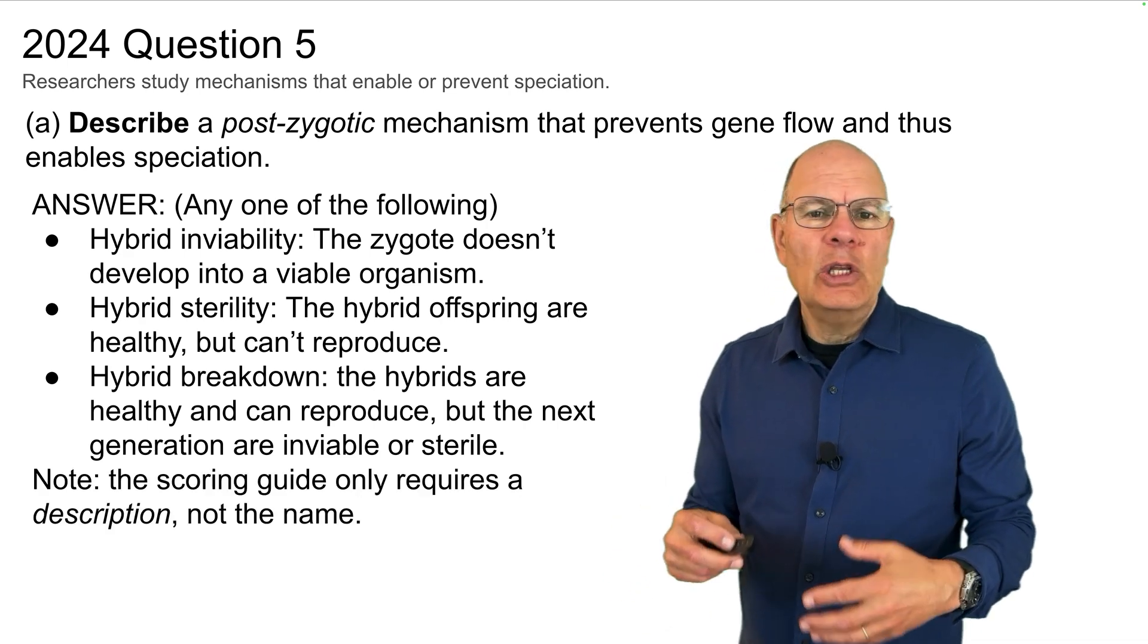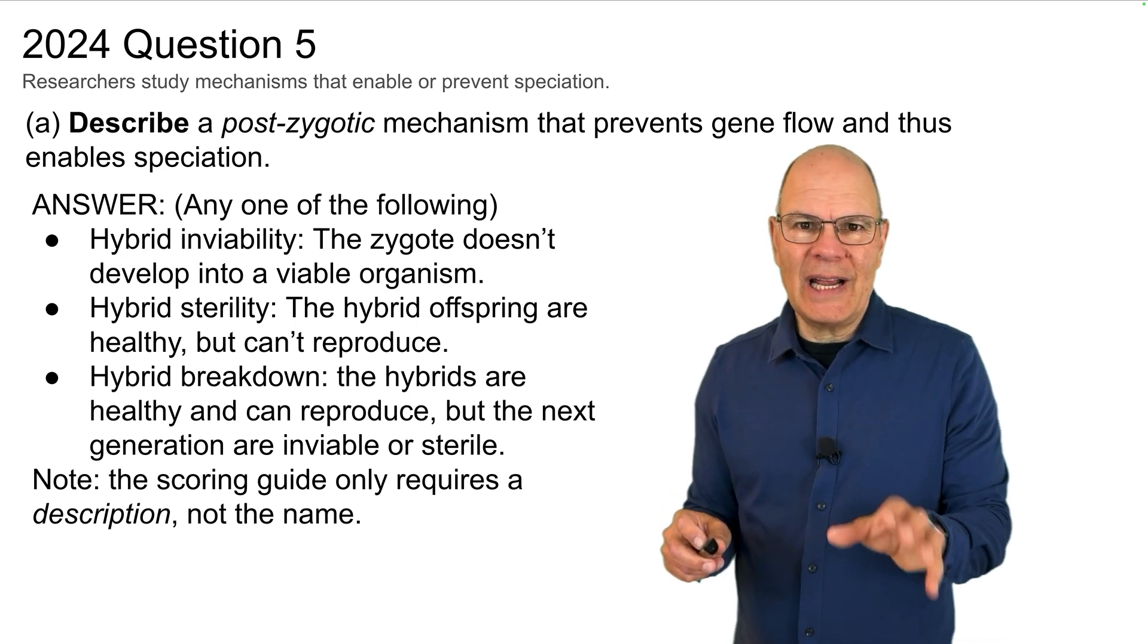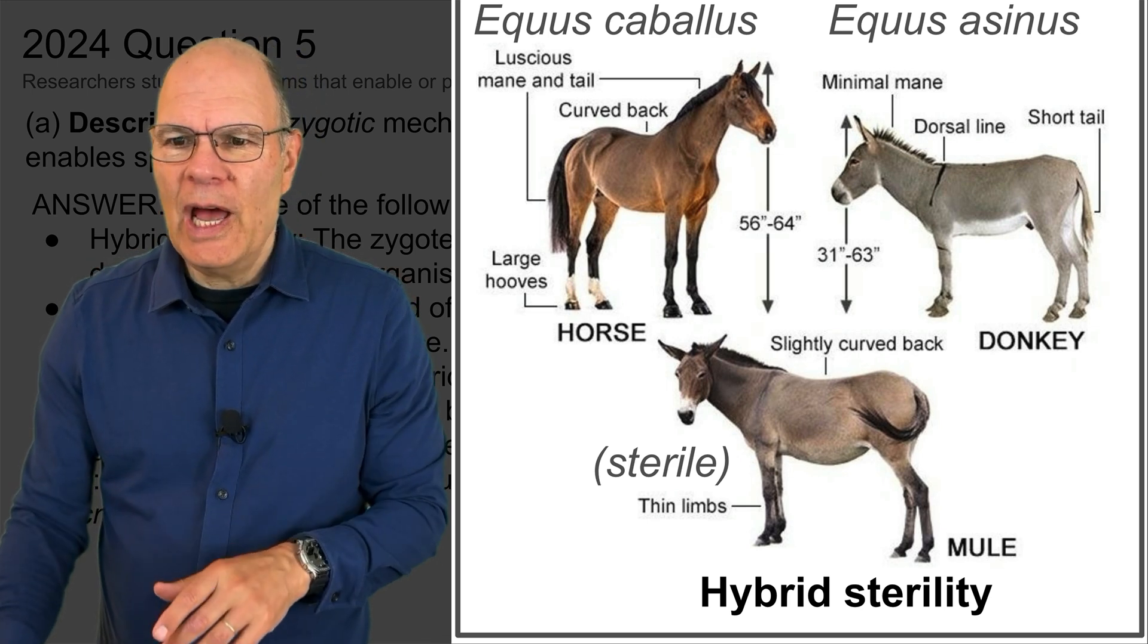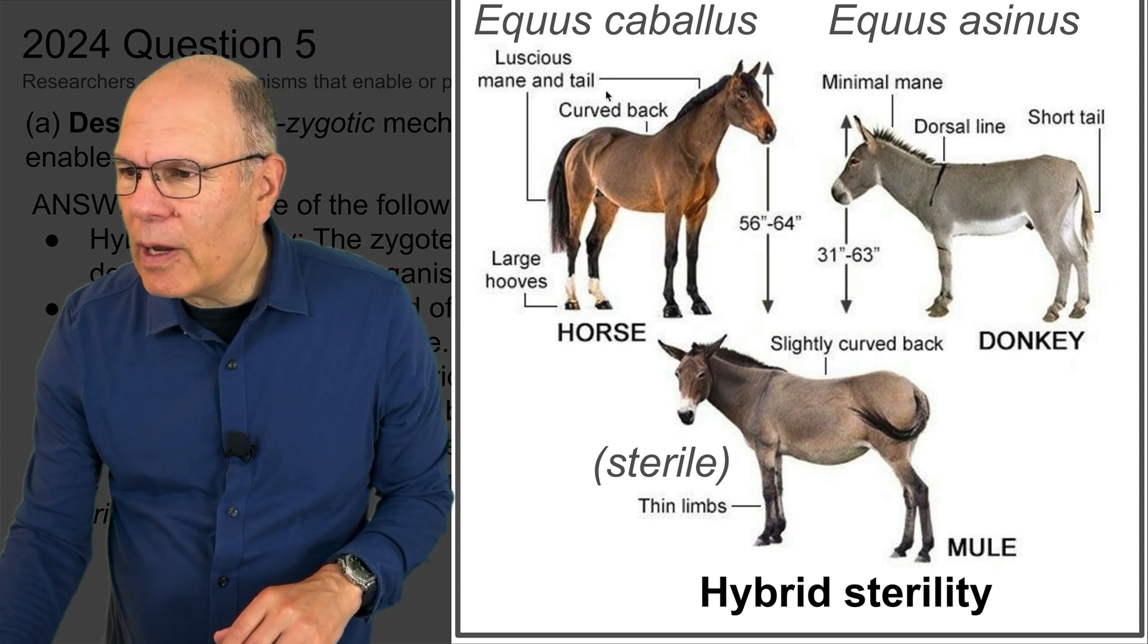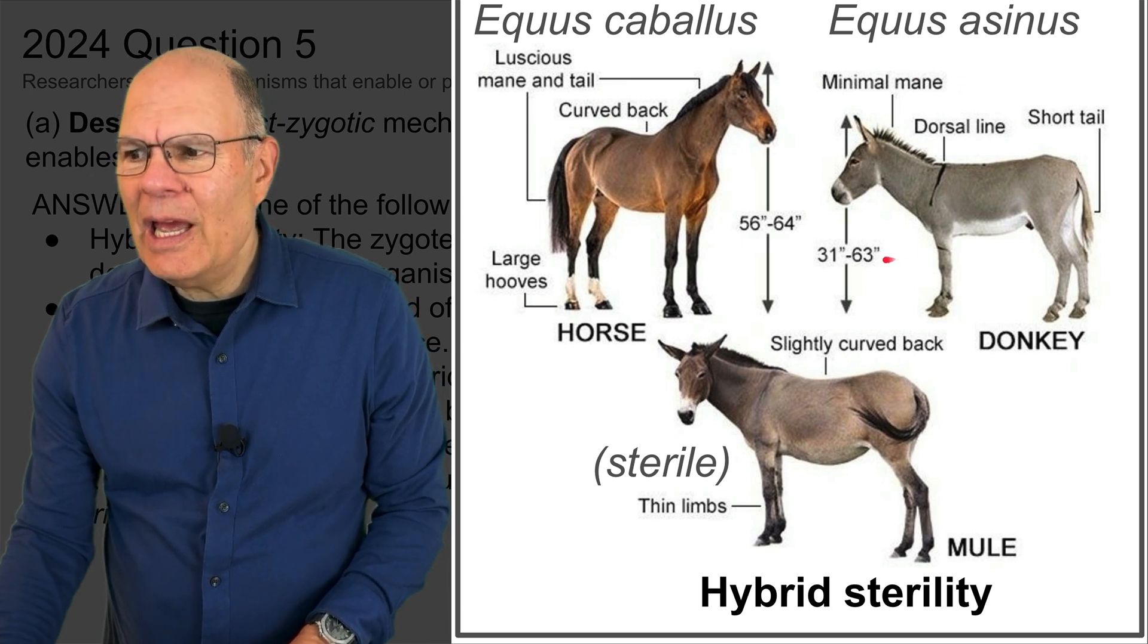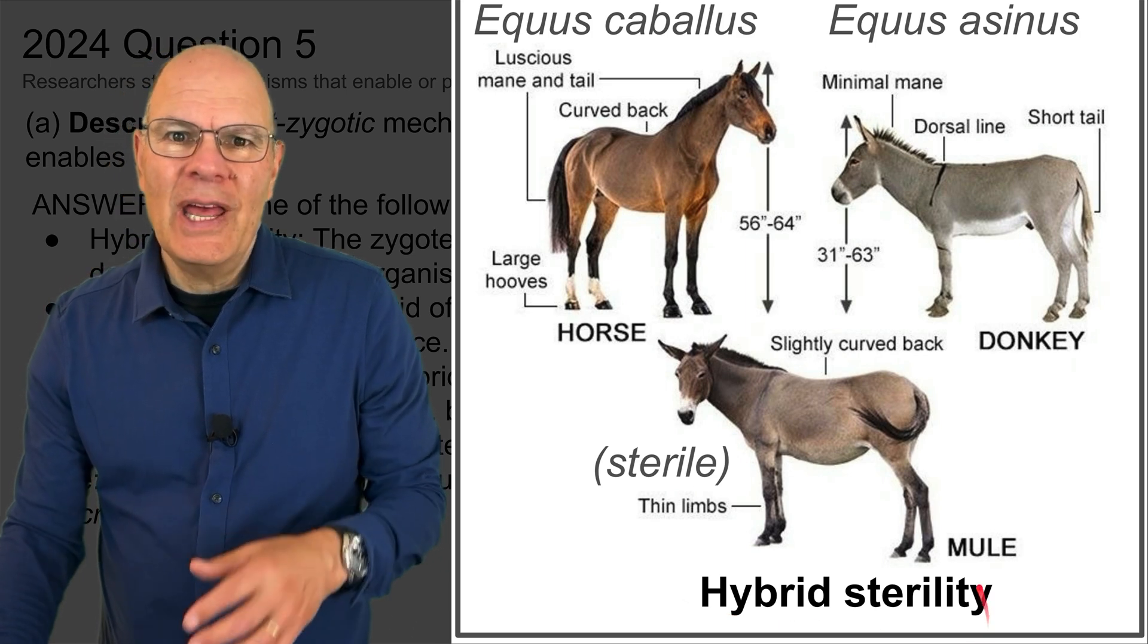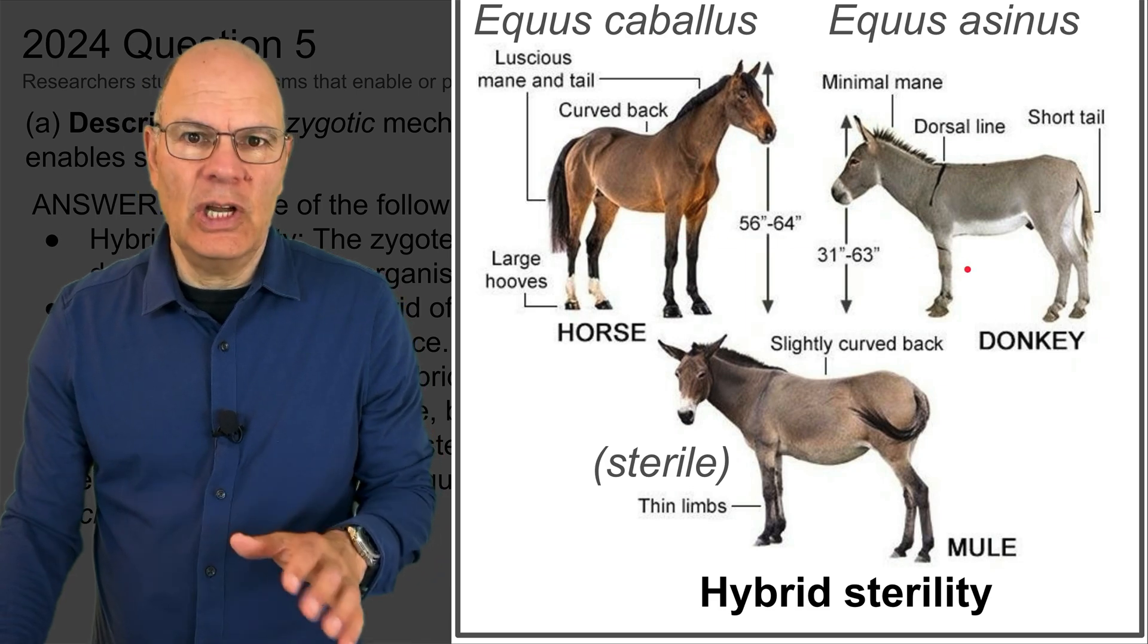If you look at the scoring guide, you only have to have the description. You didn't need to name these post-zygotic reproductive isolating mechanisms. Just to give you a visual for the answer that you probably chose, which was hybrid sterility. It's the one most familiar. Here in this diagram, you can see that a horse and a donkey can successfully reproduce to form a mule, but the mule is sterile. And in other words, that sterility prevents gene flow between horses and donkeys.